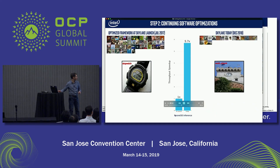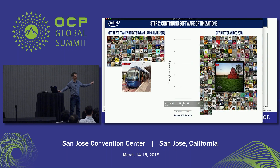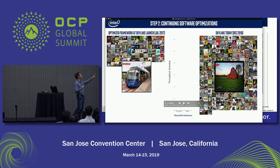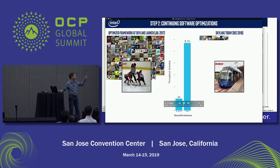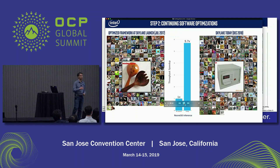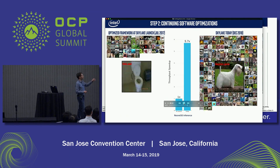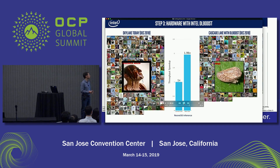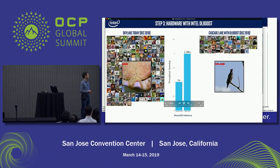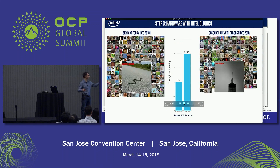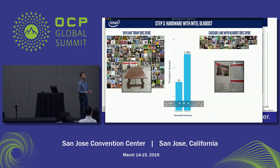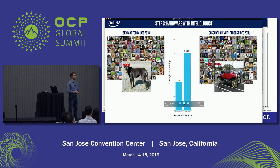Here you can see on the left the performance at Skylake launch, and on the right the performance of Skylake today. You get an additional 5.7x on top of the 50x, so almost 300x total. Then in the last set you'll see the performance of Skylake with Int8 compared to Cascade Lake with Int8, which gives an additional 2x gain — so overall performance is somewhere around 550x, mostly from software, except for this last bit which comes from the new VNNI hardware instruction.